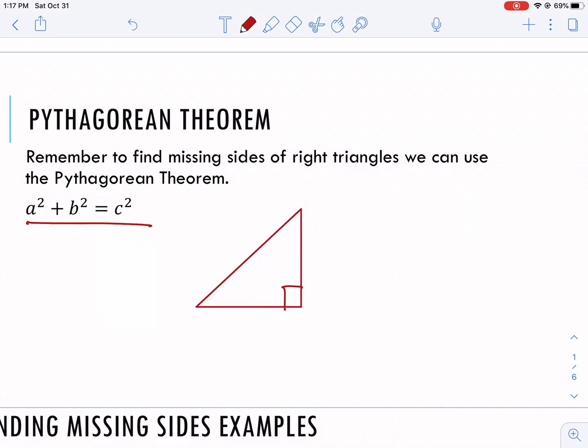If we are using a squared plus b squared equals c squared, a and b are the legs. Remember we call these the legs.